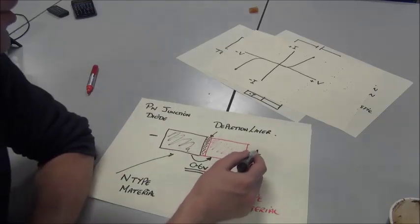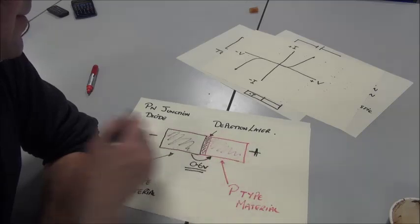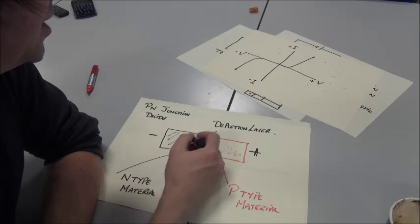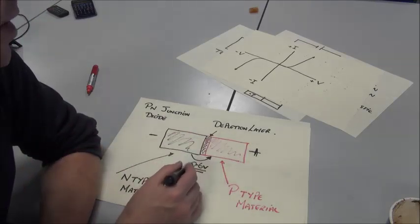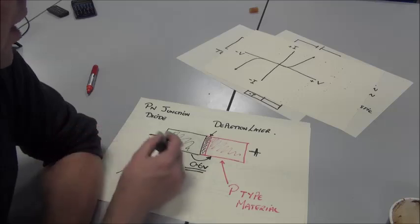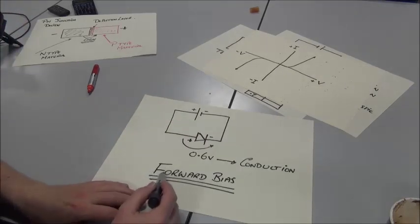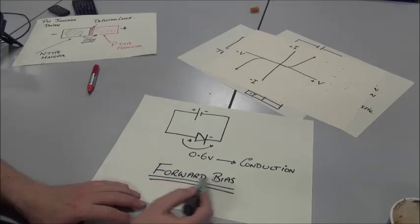If we apply positive here and negative here, we get repulsion of the positive charge carriers across the depletion layer, and we get repulsion of the electrons across the other side of the depletion layer. As long as we get 0.6 volts applied, we get conduction through the diode. When we do that, we call it forward biasing the diode.